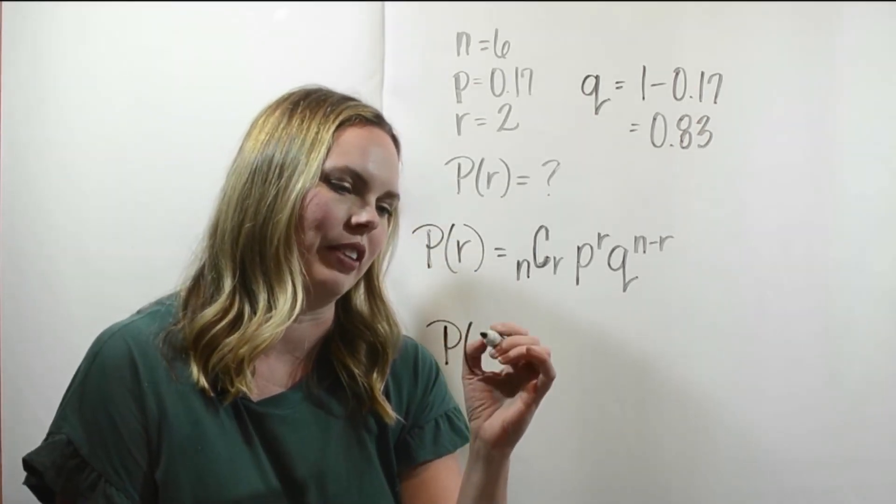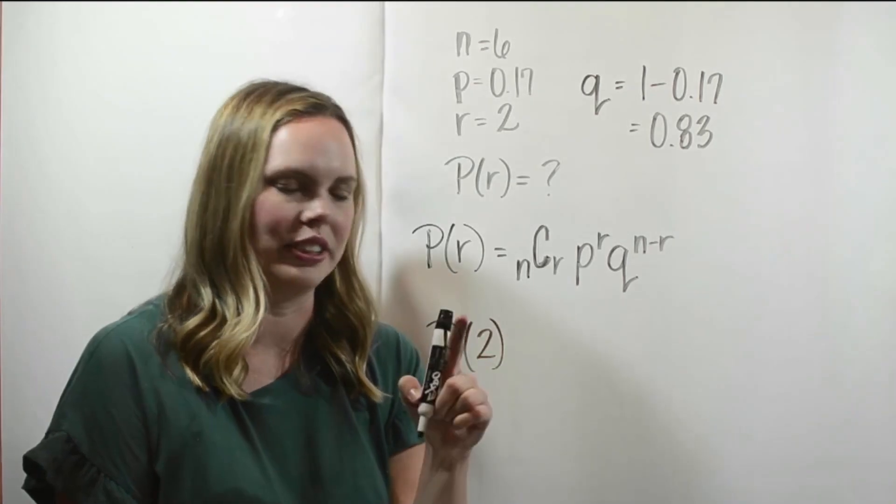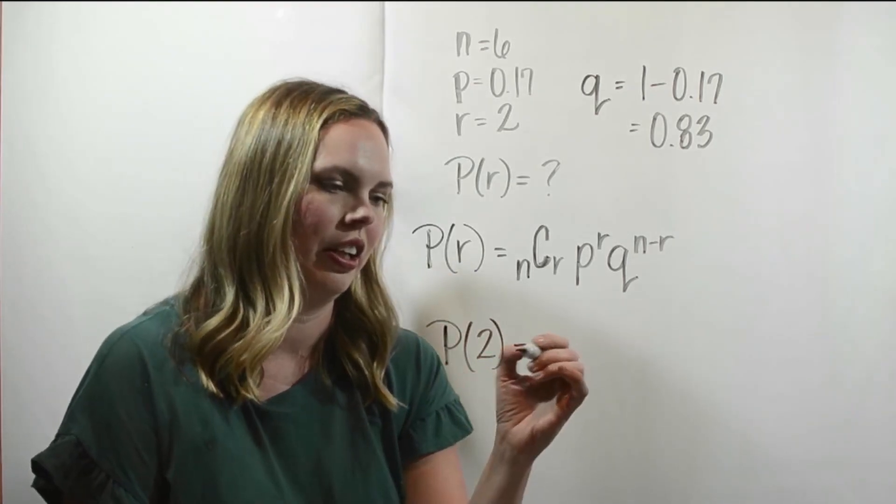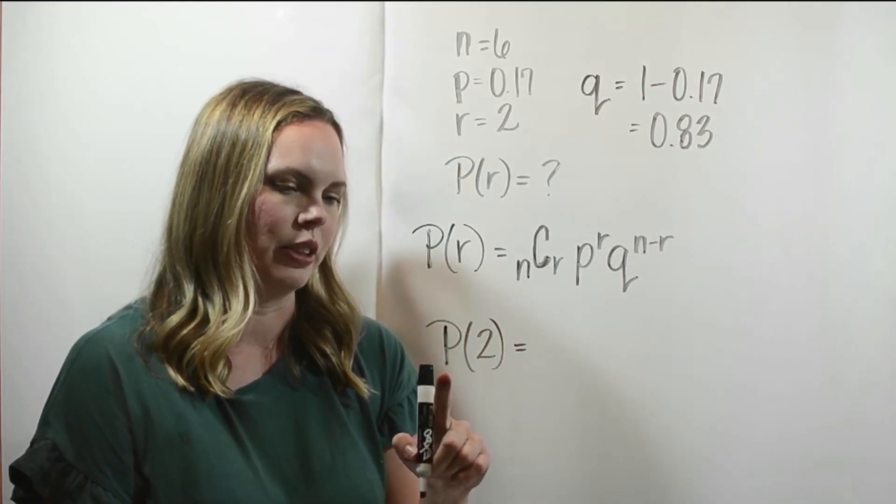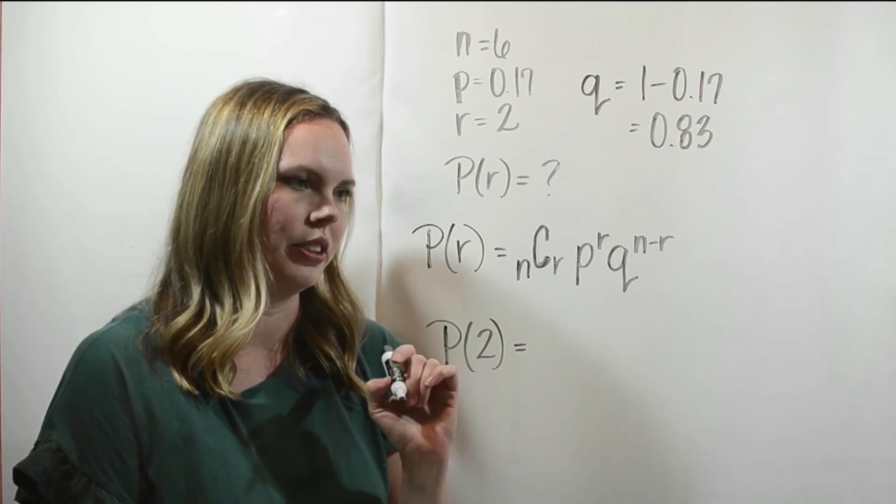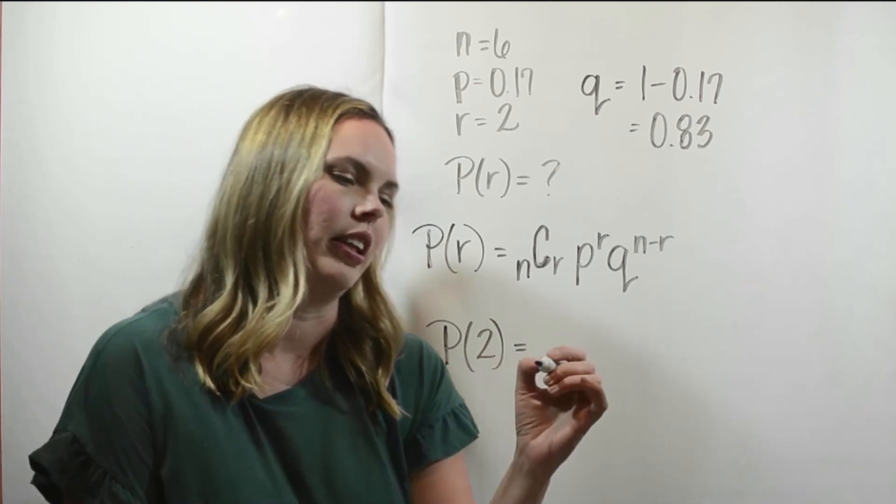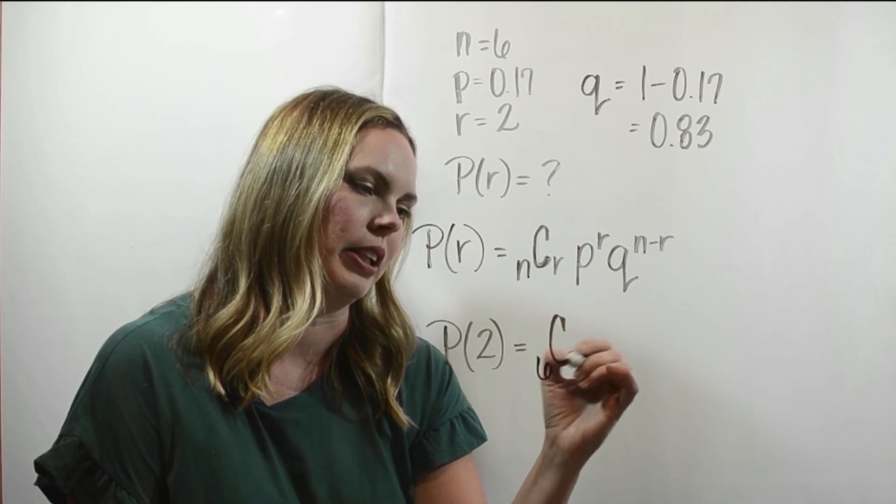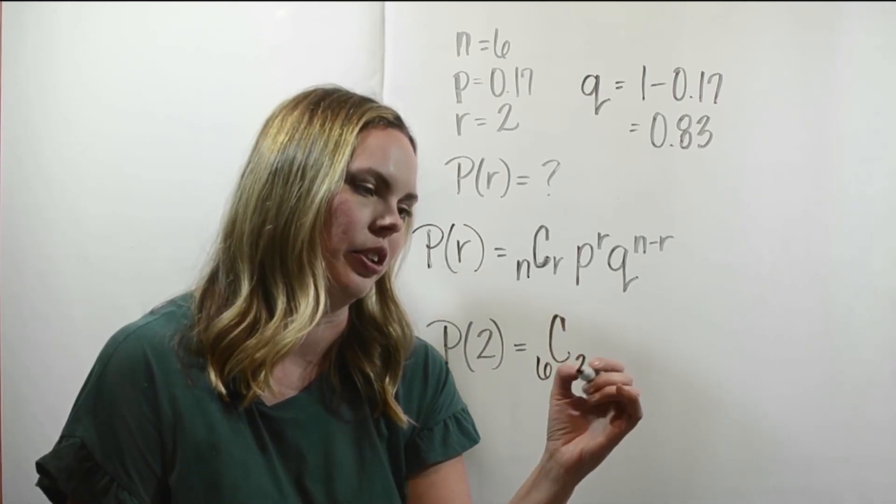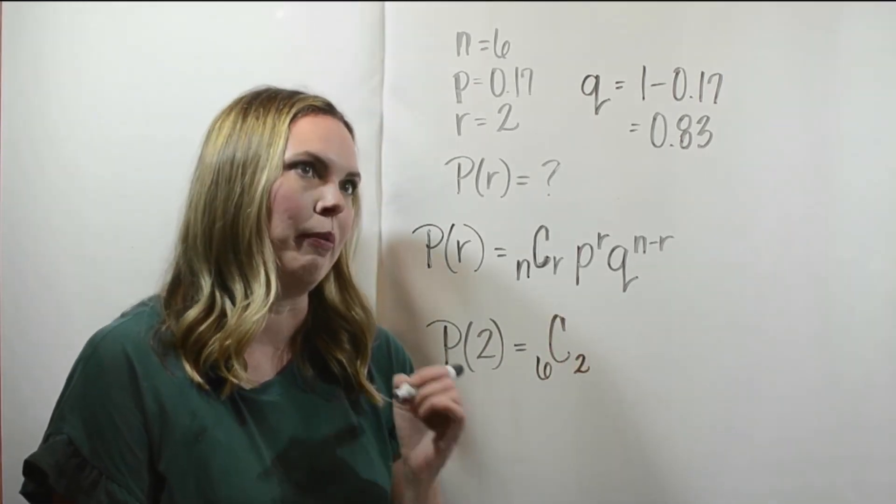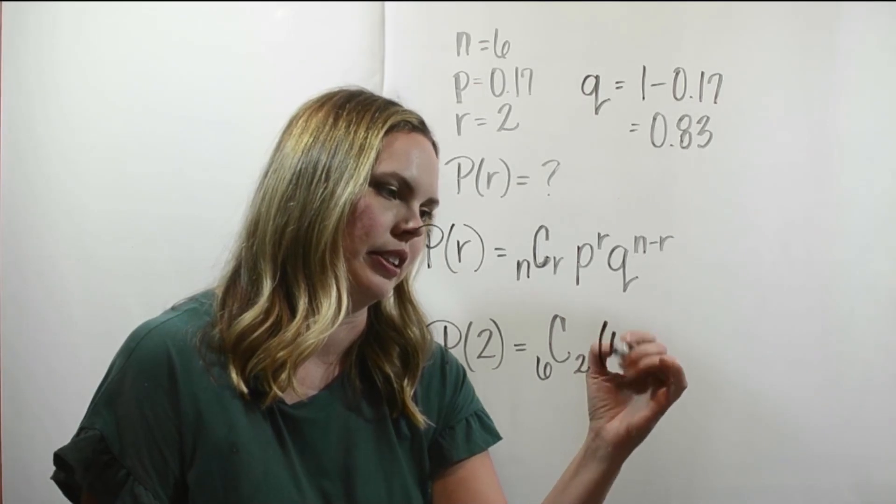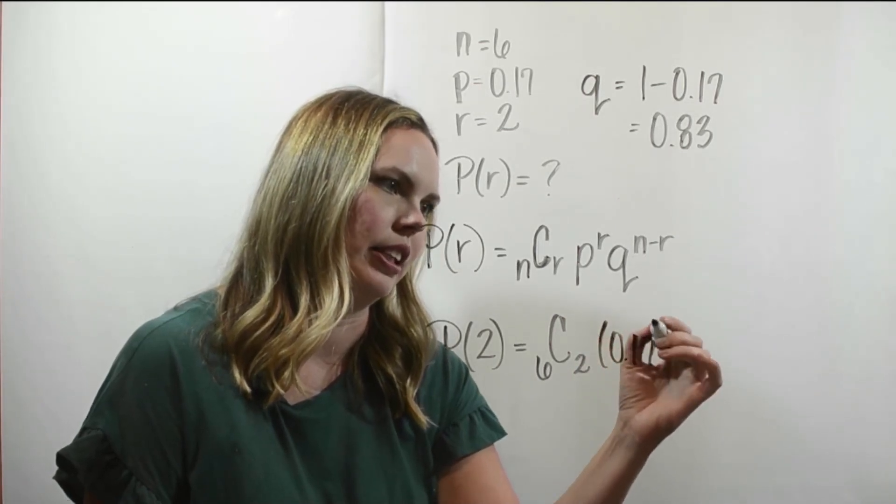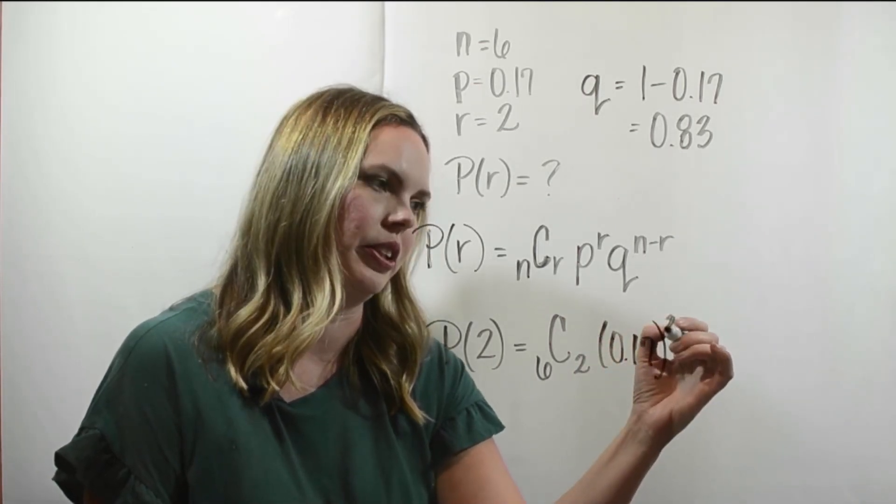All right, so then we can just at this point just plug and chug. Just going to plug into this formula. So we're looking for the probability of two successes. I just like to use this notation here. This is what I'm computing, the probability of two successes. Then my N is 6, so this is going to be 6C2. My P is 0.17, so this is going to be 0.17 and it's raised to the R, which is 2.